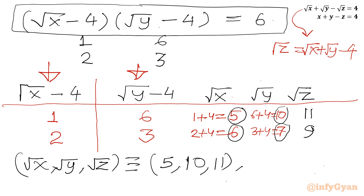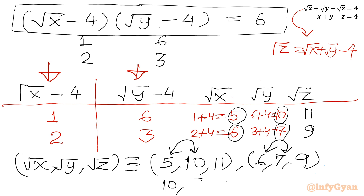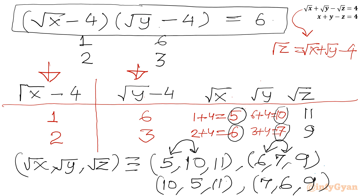Now I will write all ordered triplets for (√x, √y, √z), including the swapped x and y values since the equation is symmetric in x and y. So the four root-triplets are: (5, 10, 11), (10, 5, 11), (6, 7, 9), and (7, 6, 9).